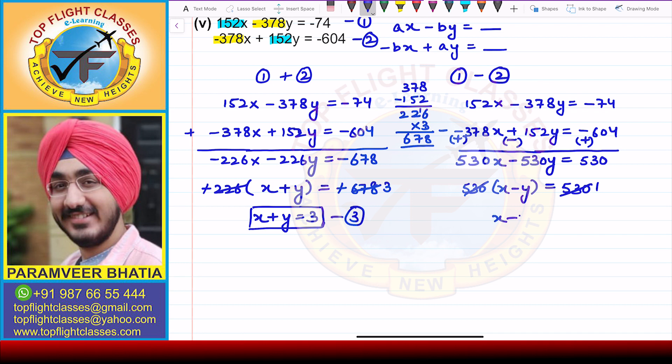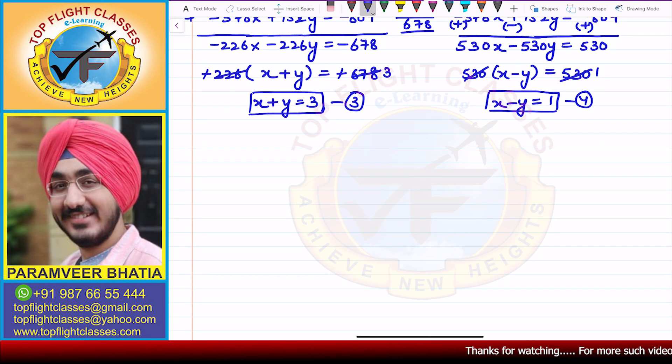x - y = 1. So this is the fourth equation. Now third and fourth equation, now you have simplified.